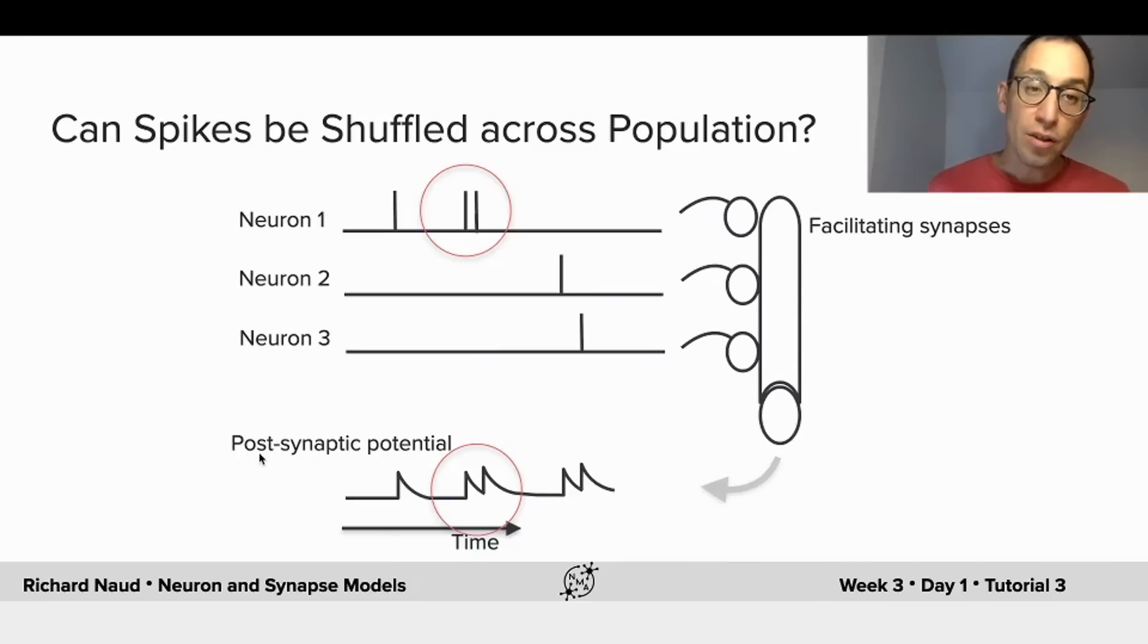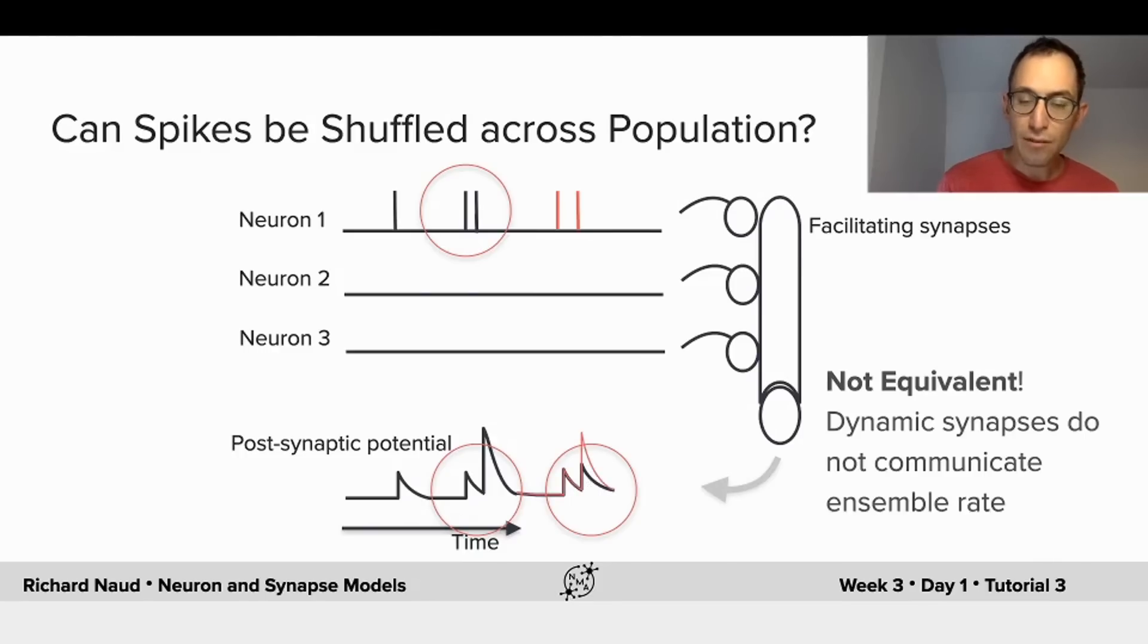Now let me come back to the question, can we shuffle the spikes across the population? Well, in the presence of, say, facilitating synapses, two spikes coming close together will not have the same postsynaptic effect, but instead the second one will be much amplified. Well, that means that if I take those two spikes and I move them to be in this neuron, then this neuron has a higher frequency exactly at that time, meaning that the second spike will have to be amplified. So the difference between this red curve here and the black curve here is what changes when, instead of having all the spikes distributed among the population, you put all the spikes in the presynaptic population.